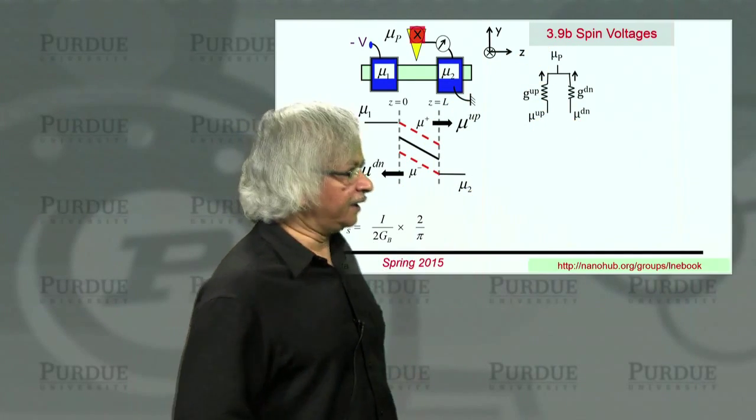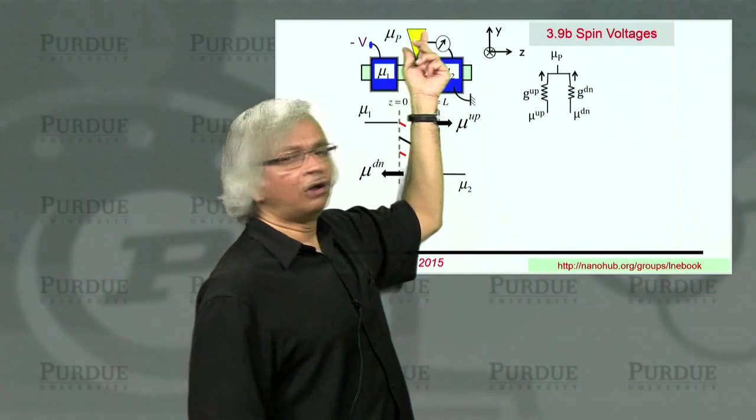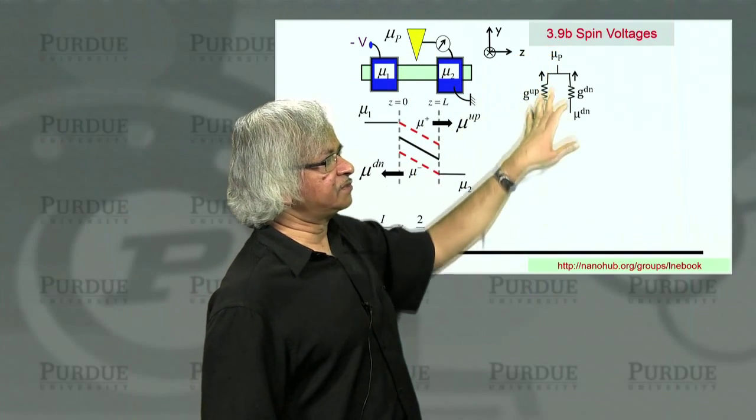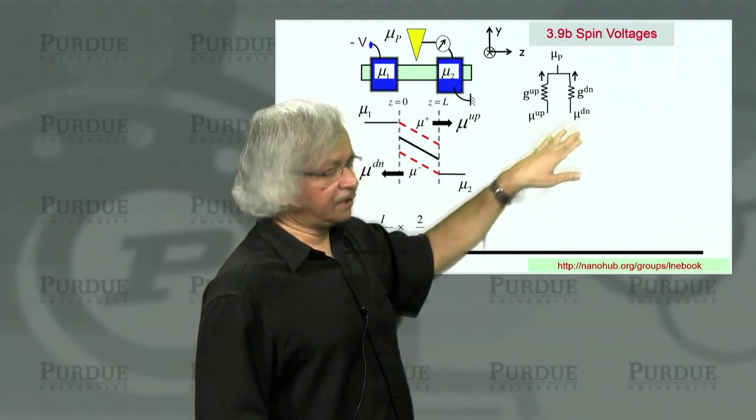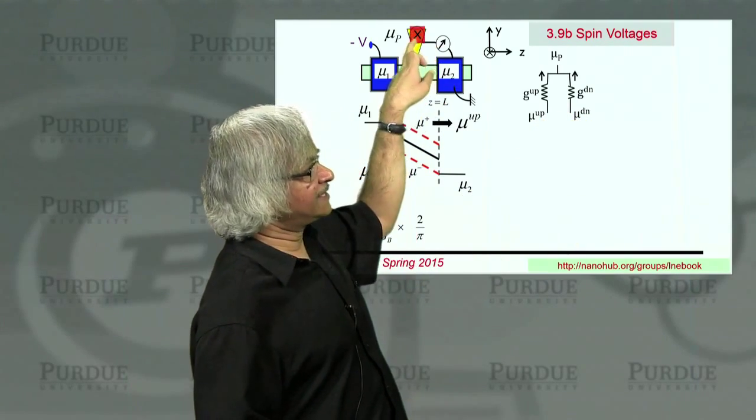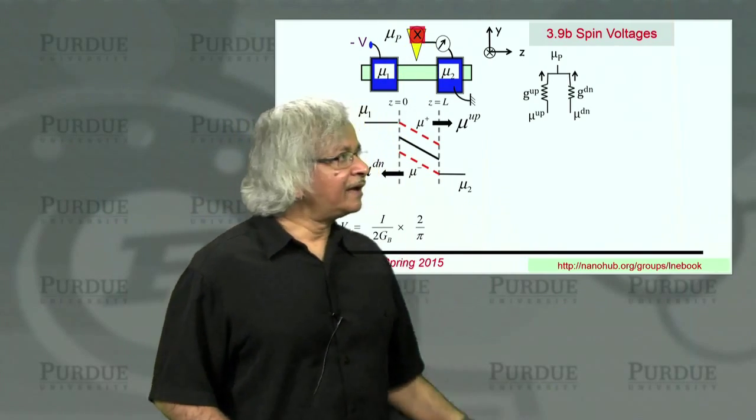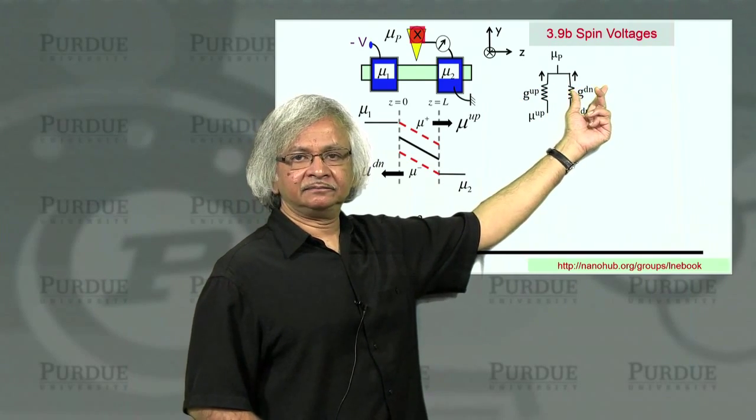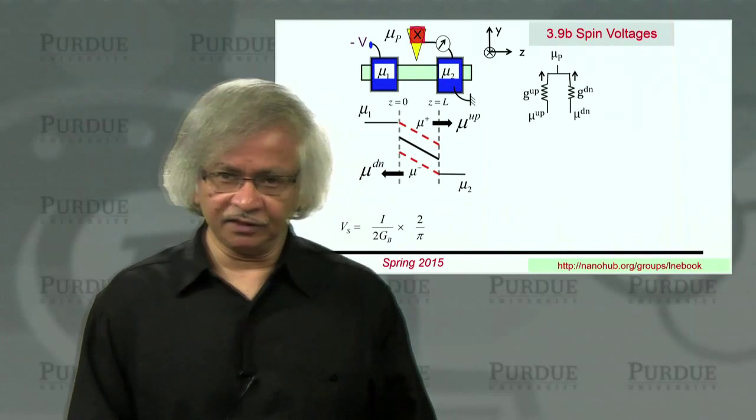Now ordinarily, what would happen is g up would be equal to g down, if you had an ordinary probe. And then mu p would just be half of these, half of the sum. That's like the average of the two. But if you use a magnetic probe, let's say a magnet that points in the x direction, then one of these conductances will be much bigger than the other.